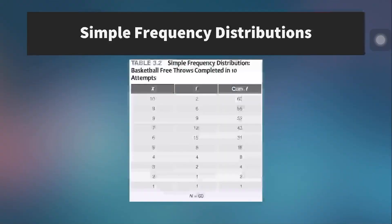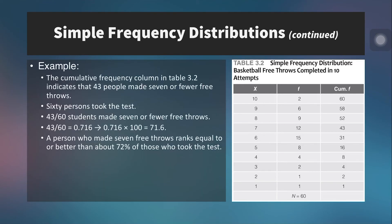Finding a percentile from a simple frequency distribution works similarly. With a free throw dataset of N=60, we see both frequency and cumulative frequency. For a score of 7: 12 people scored exactly 7, but 43 people scored 7 or fewer. So 43 divided by 60 equals 0.716, or about 71.6%. Rounded up, a person who made 7 free throws ranks equal to or better than about 72% of those who took the test.